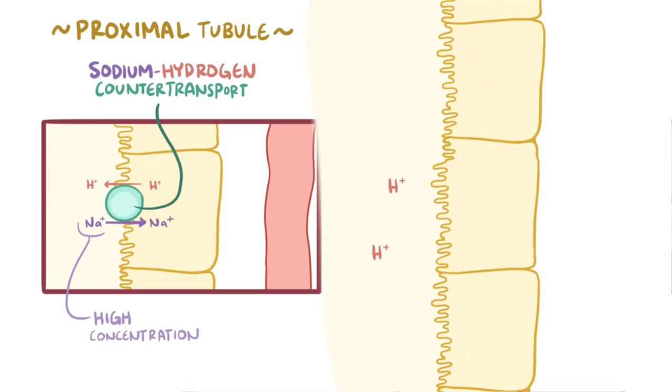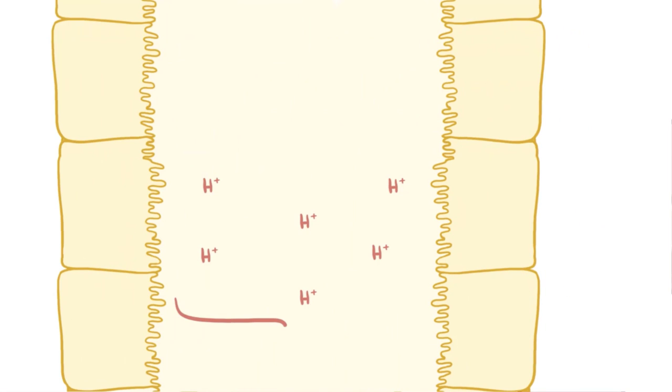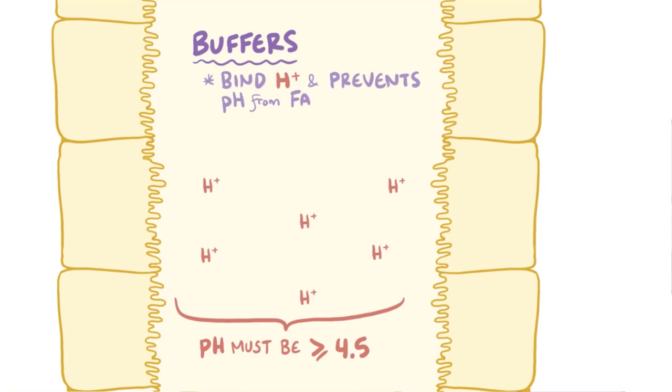The urine can only hold so many free hydrogen ions because the pH starts to drop really low, and the tubules can't maintain a urine pH below about 4.5. So to get around this limit and hold more hydrogen ions, the urine has chemical buffers, which bind to the hydrogen ions and prevent the pH from dropping too low.